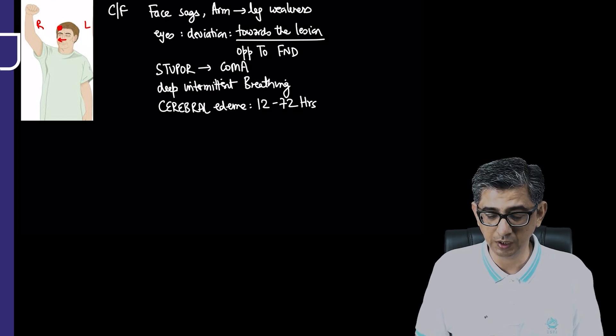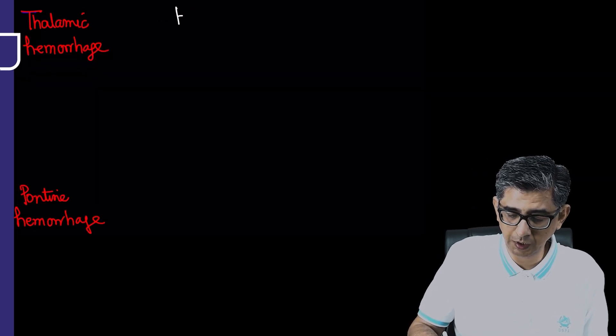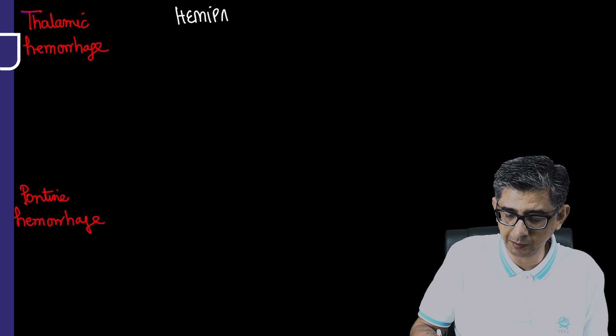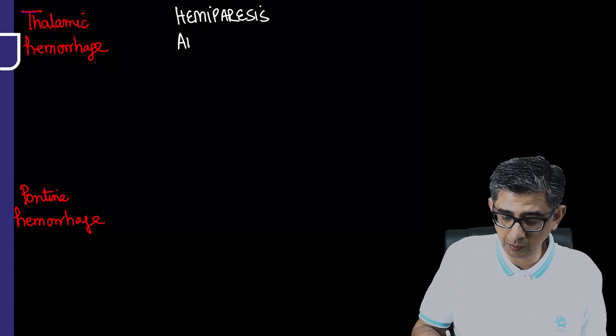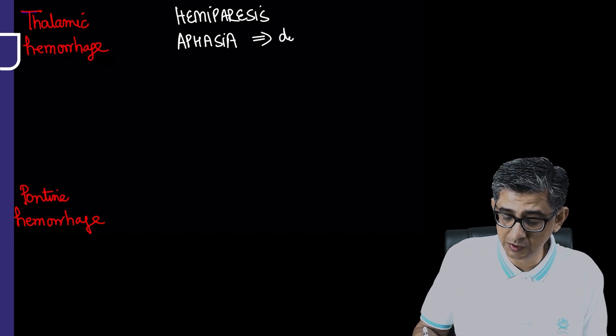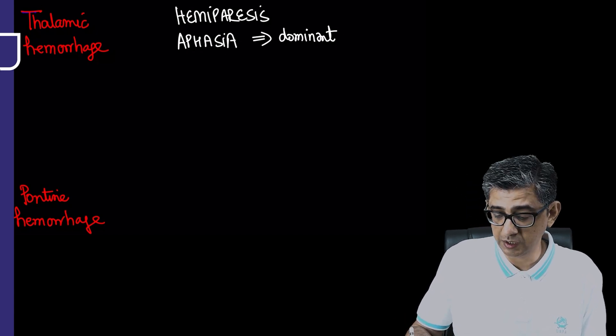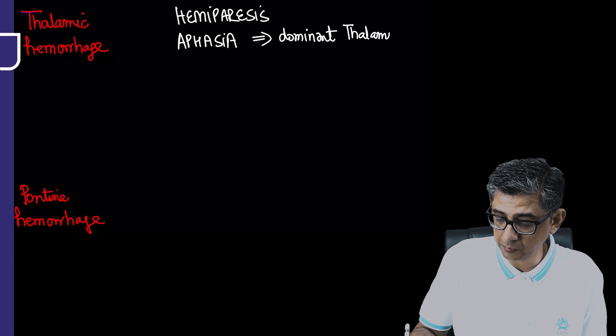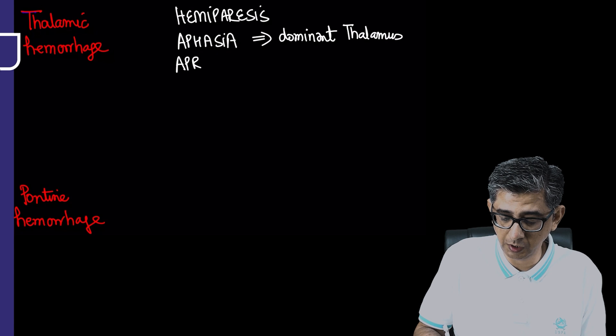Features of thalamic hemorrhage include hemiparesis, explained by internal capsule involvement. You could also read about aphasia and apraxia with thalamic hemorrhage. Why aphasia with thalamic hemorrhage? The thalamus is a relay center not only for sensation but also for speech. If the dominant thalamus is affected, aphasia can occur.